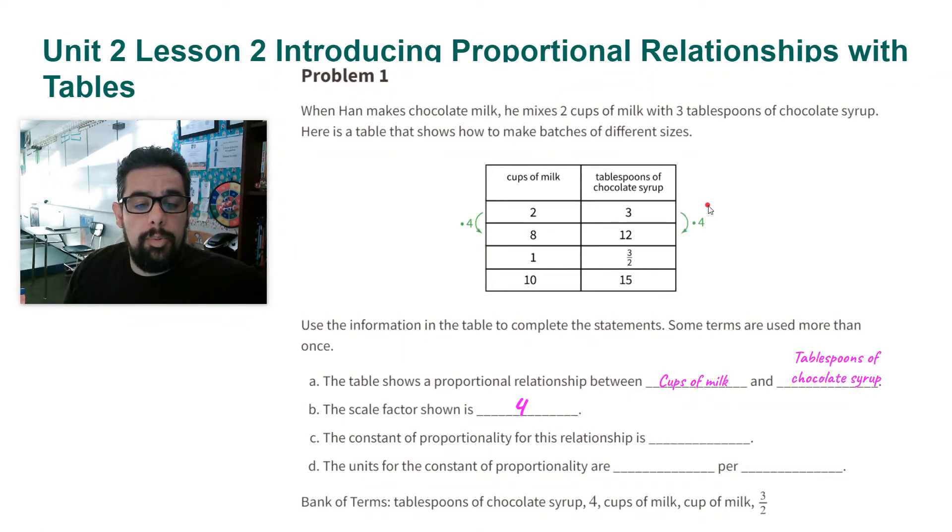Part C, the constant of proportionality for this relationship is, and we can see it in lots of different rows, but we're going to look right here in this row right here for one. One cup of milk, whenever you have one of something, that is a constant of proportionality. What you learned in sixth grade was unit rate. The unit rate is a constant of proportionality. So here it is three over two, three halves.